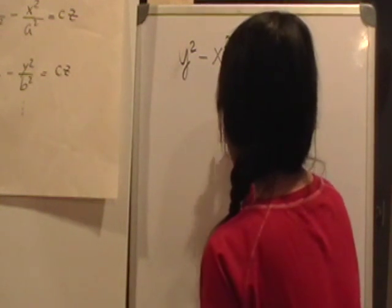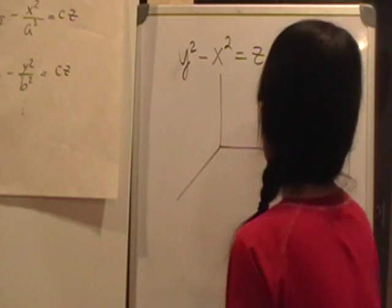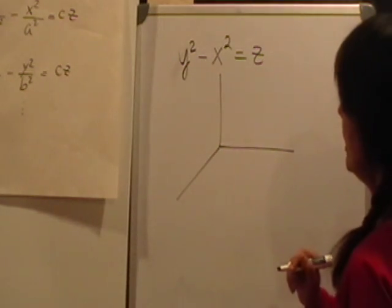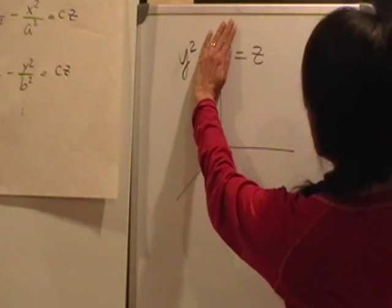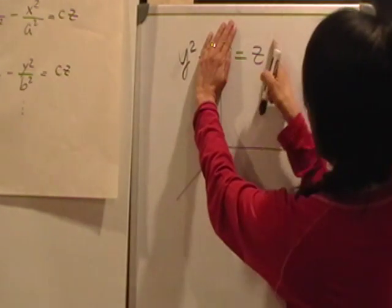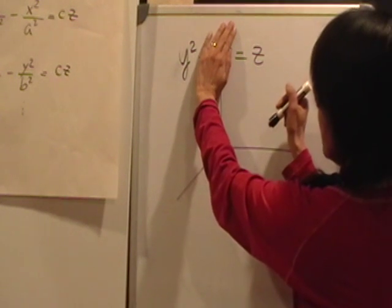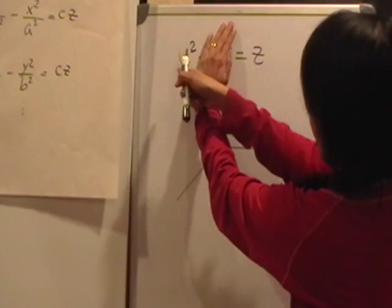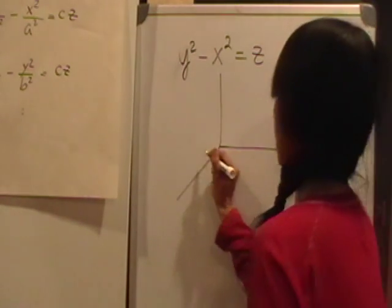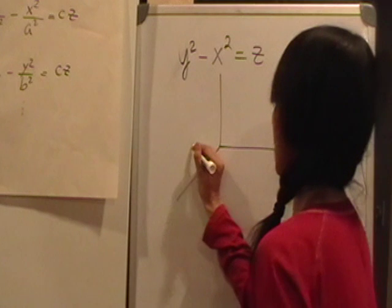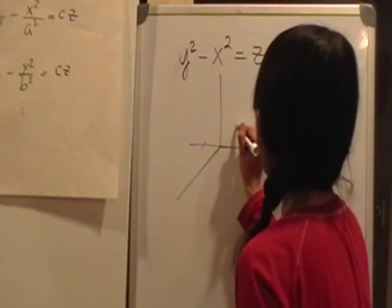If we look at the traces on the coordinate planes — if I cover x, I get y squared equals z: one square term and one linear term, so that's a parabola with vertex at the origin. When y equals plus or minus one, z equals one.